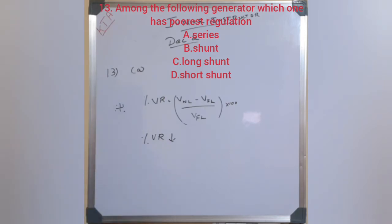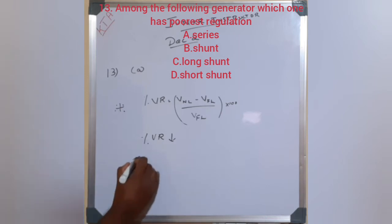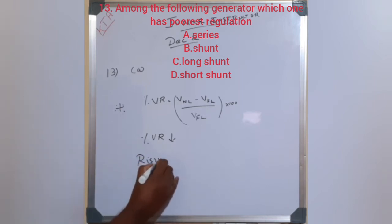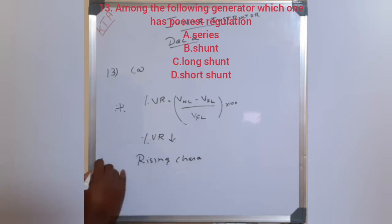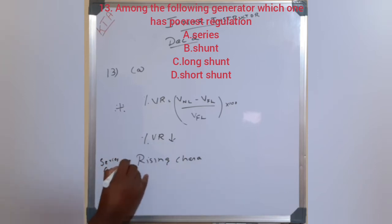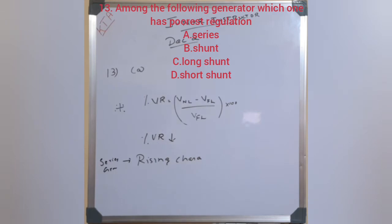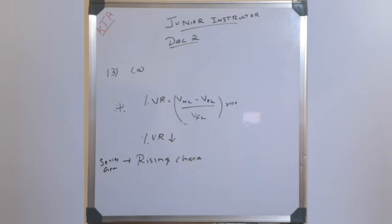The series generator has a rising voltage characteristic. As load increases, the terminal voltage rises, resulting in a very high voltage regulation value. This rising characteristic is why the series generator has the poorest voltage regulation.